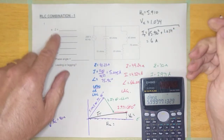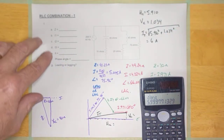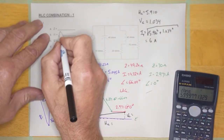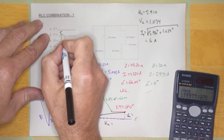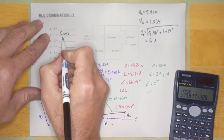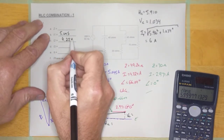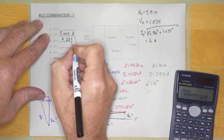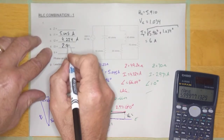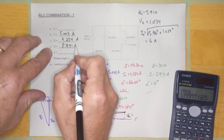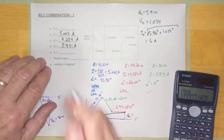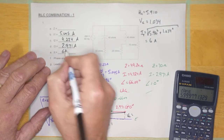Just to verify, we have the individual branch currents: this one is 5.045 amps, this one is 4.224 amps, and this one is 2.971 amps. I total is calculated right there — it's 6 amps.